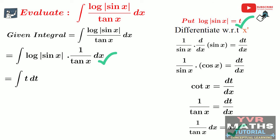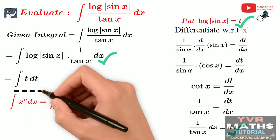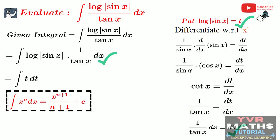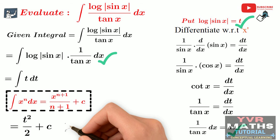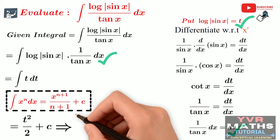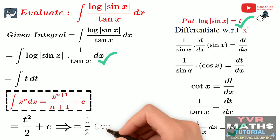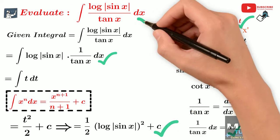If we observe this integral, it is clearly in the form of integral of x^n dx. By using this standard integral formula, we get t² by 2 plus c. Now replace the new variable by the original variable. The original variable function is log|sin x|. Substituting t = log|sin x|, the final answer is 1 by 2 into (log|sin x|)² plus c. This is the final answer for the given integral.